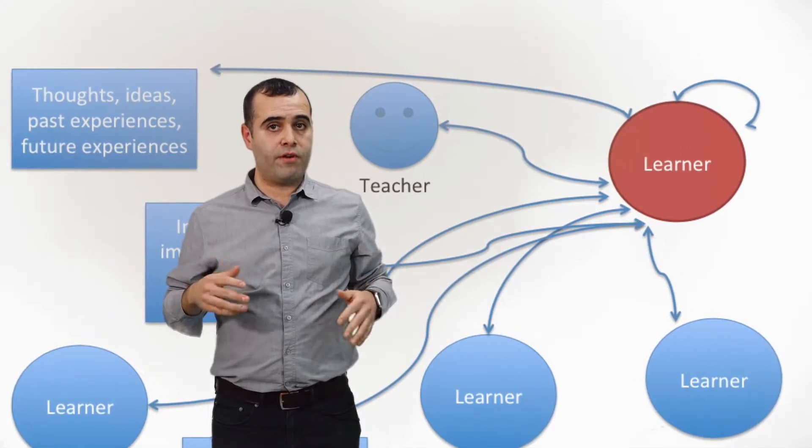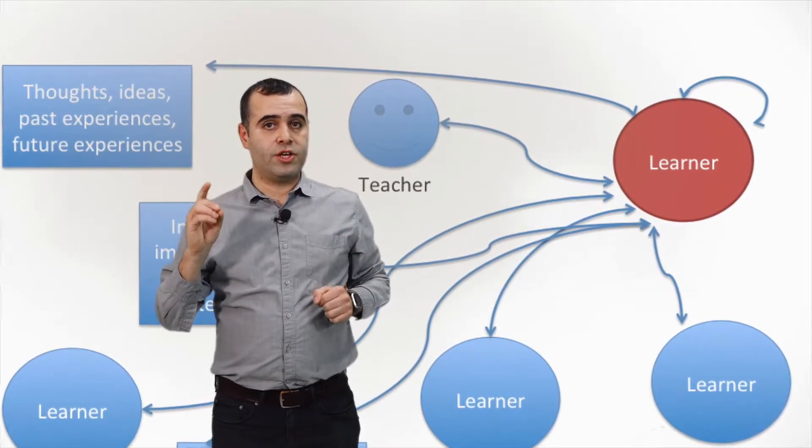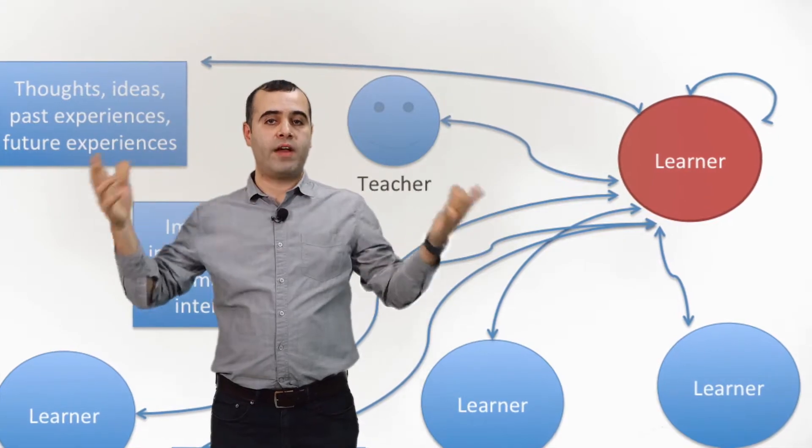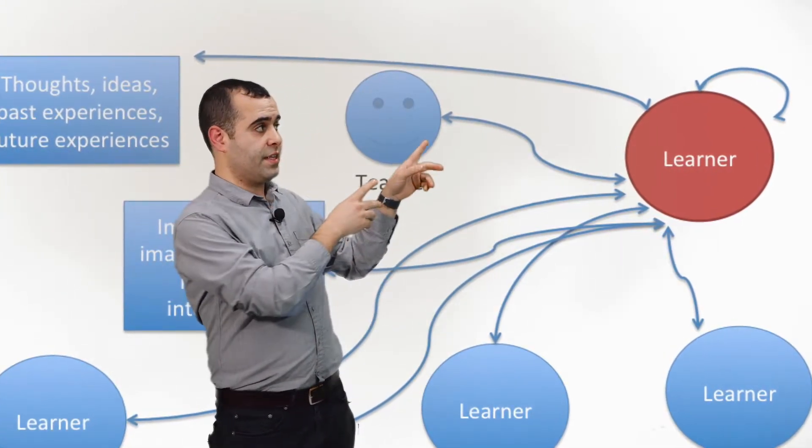This was an example of one learner's interaction. So how do the whole interactions look? Maybe something like this.